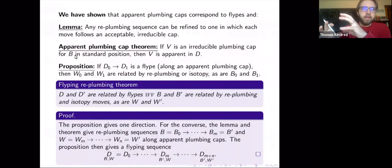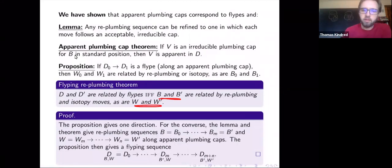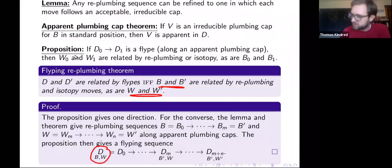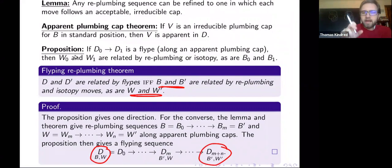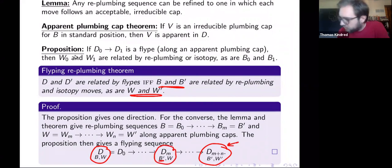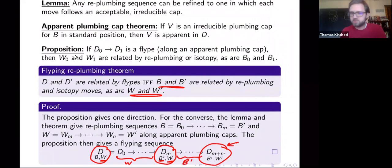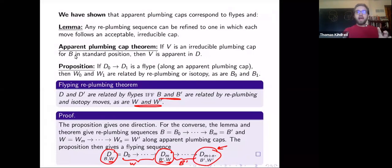You can put these together to say that flype-related diagrams are the same as diagrams whose black surfaces are re-plumbing related and whose white surfaces are re-plumbing related. For the entire first part of a sequence of flypes, the white surface is unchanged except by isotopy; for the last part, the black surface is unchanged except by isotopy. So flypes correspond to re-plumbing moves — this is half of the proof of the Flype theorem. If we can show that the black surfaces are related by re-plumbing moves and so are the white surfaces, we know the diagrams are related by flypes.